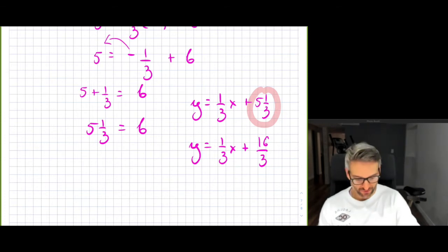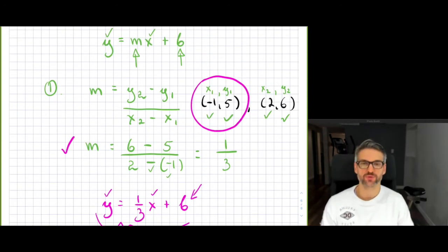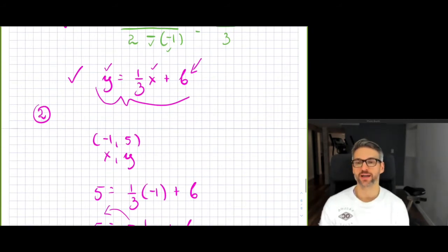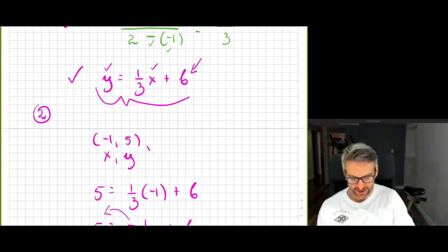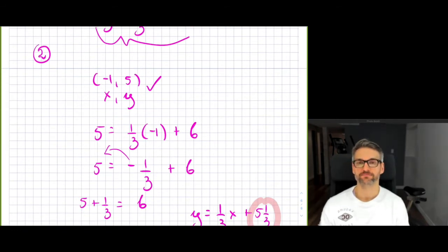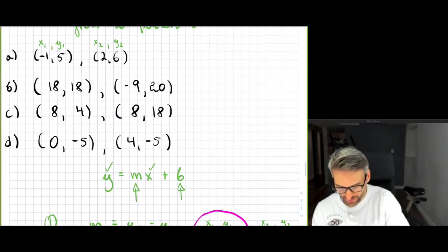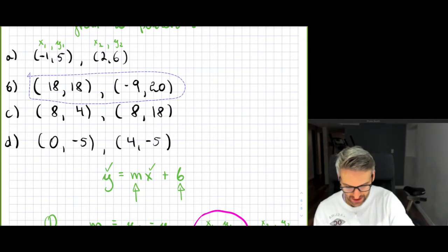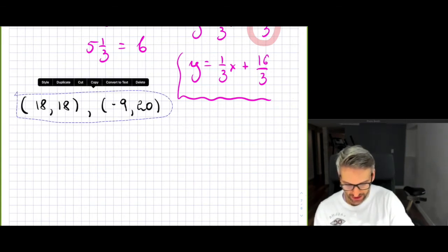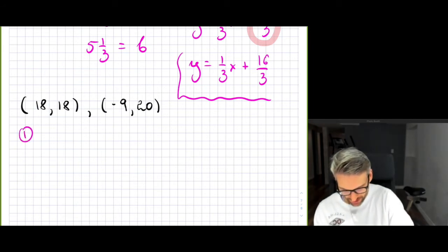There you have it — you found your equation of a line. Step 1: find your slope by substituting your values in. Step 2: once you have your slope, pick a point, substitute it back in, and solve for b. That was the first example. Now let's look at another example. Step one: find the slope, so m equals y2 minus y1 over x2 minus x1.